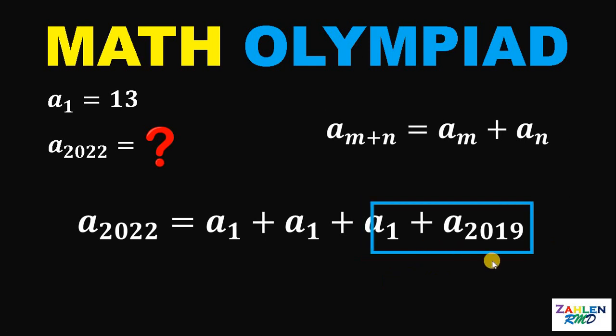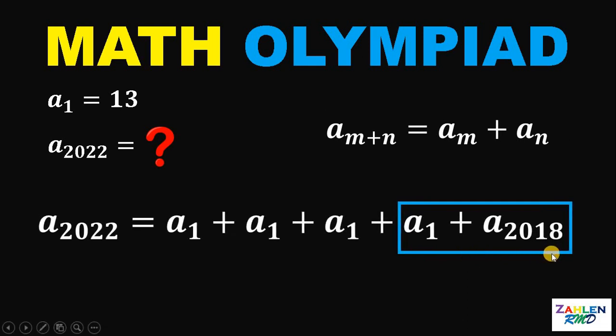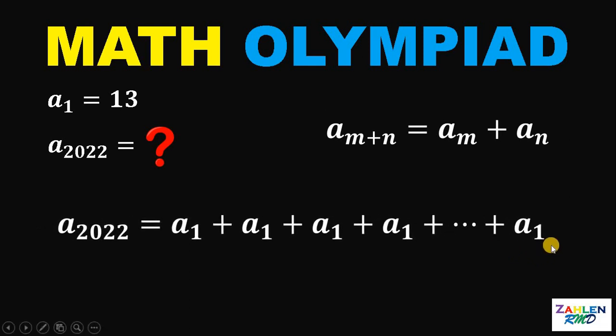And this a sub 2019 can be written as a sub 1 plus a sub 2018. And so on and so forth. So we can do this forever until we reach a sub 1 plus a sub 1.